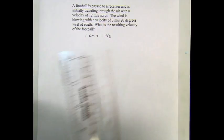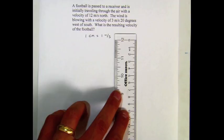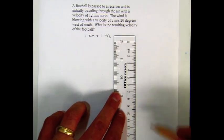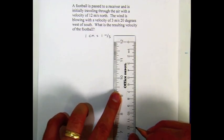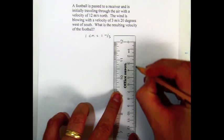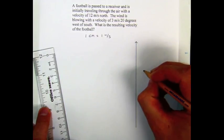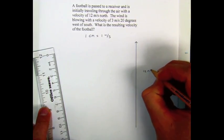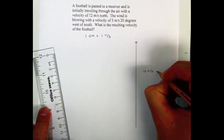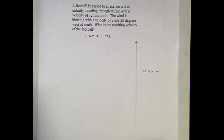Let's draw our first vector. Let's choose where our origin is going to be and we know that we're going to draw a line of 12 centimeters to represent 12 meters per second. It's going to go straight up. The top of my paper is going to be north. So that vector represents the football initially traveling 12 meters per second north.